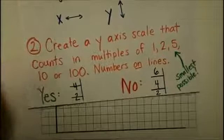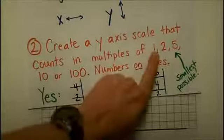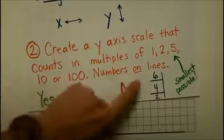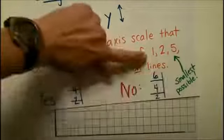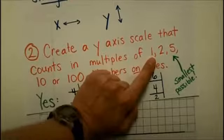Now, I'm going to create a y axis scale that counts in multiples of 1, 2, 5, 10, or 100. I'm going to make sure I put the numbers on the lines. And I want to use the smallest possible scale that I can. So, if I can make 1s fit, I want to use 1s.